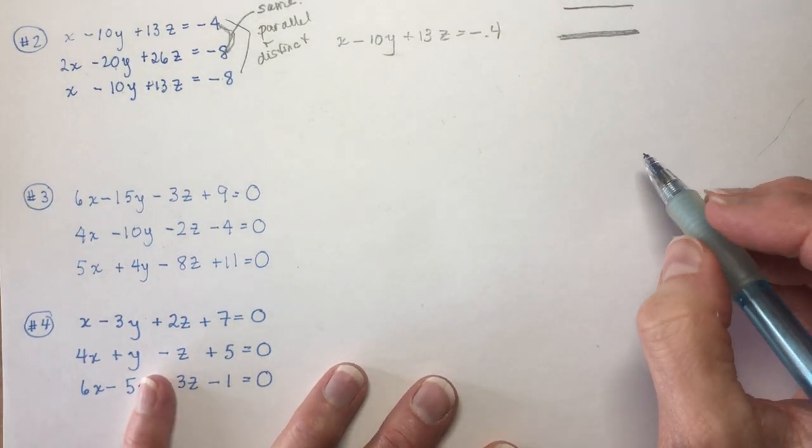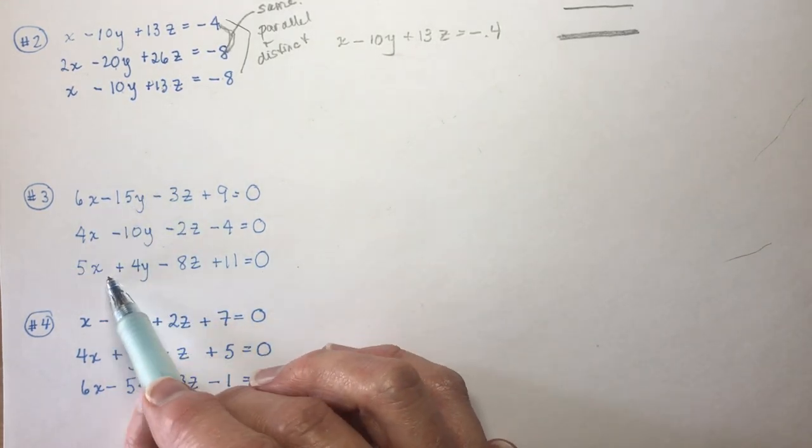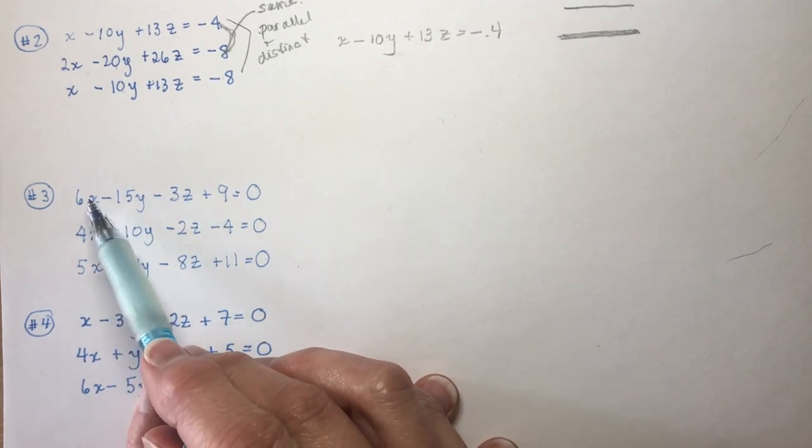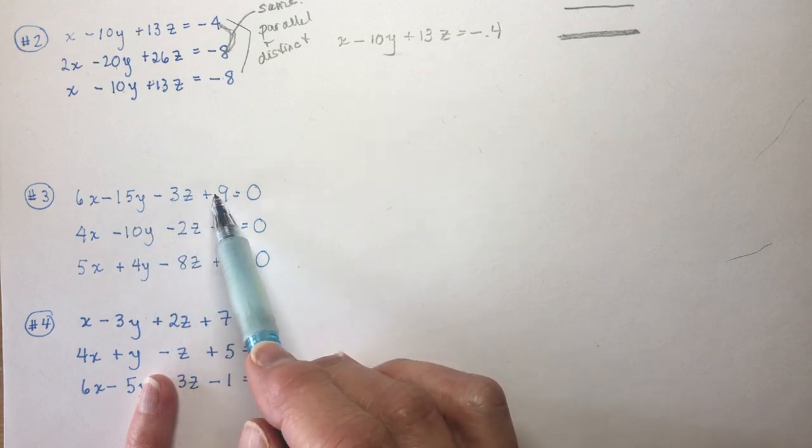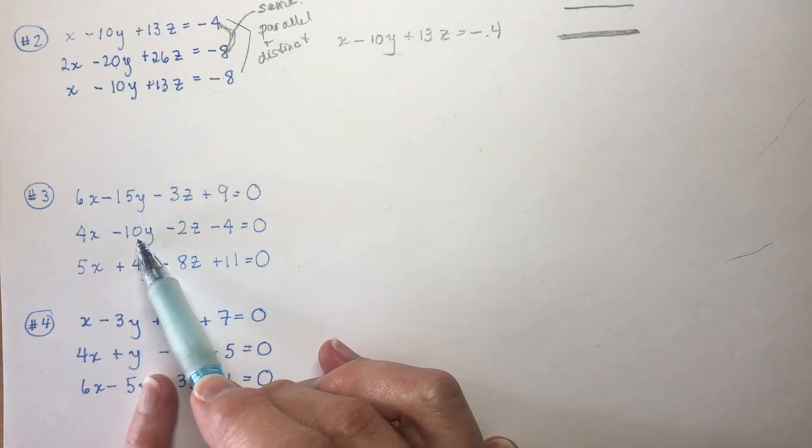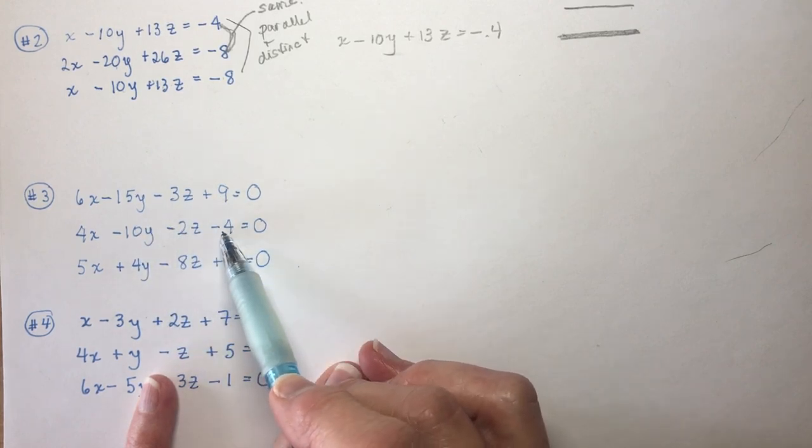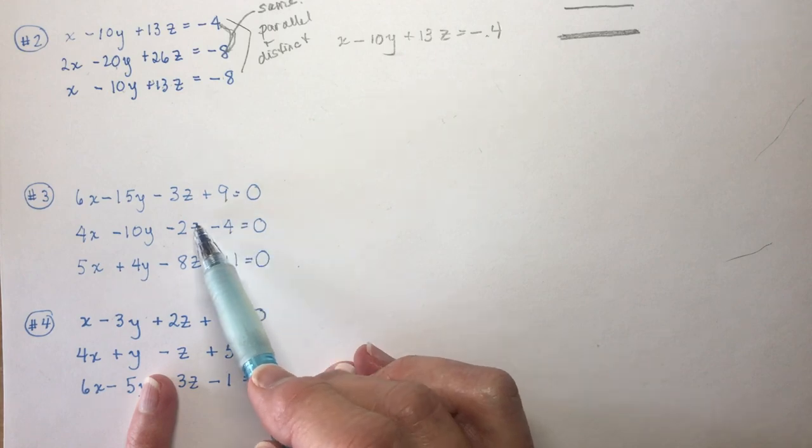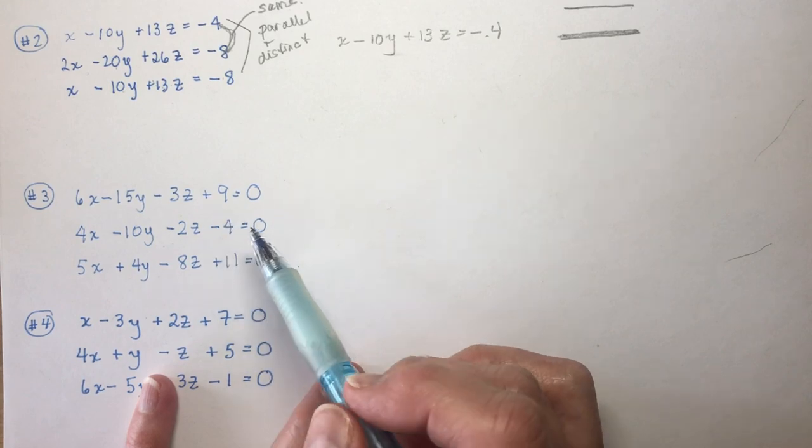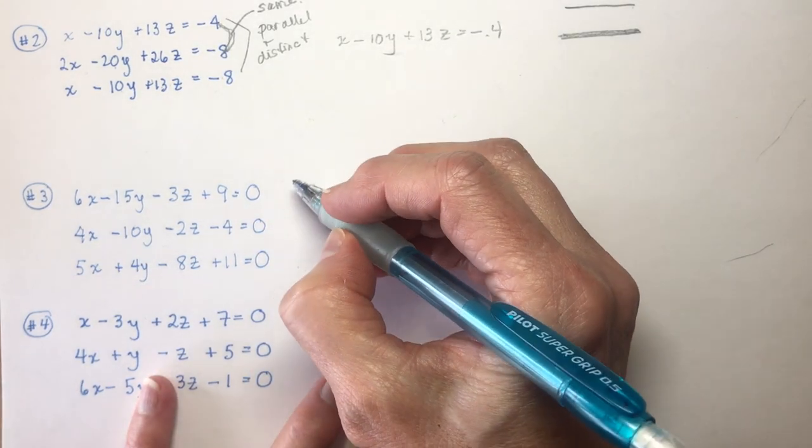The third one, I have 6 minus 15. So, you're taking a look here to see, do I see any similarities here at all? And, if you look here, if you look at the coefficients of these two, 6 over 4 is 3 halves, minus 15 over minus 10 is 3 halves, this is 3 halves, and this is 3 halves. So, they're definitely parallel, but are they distinct?